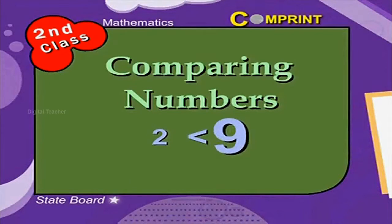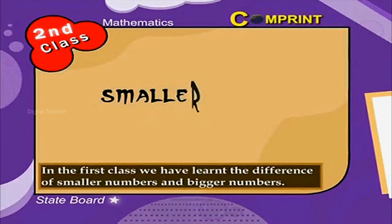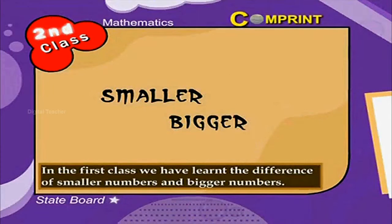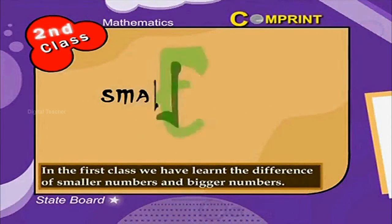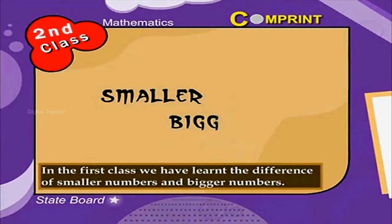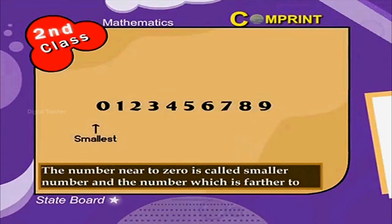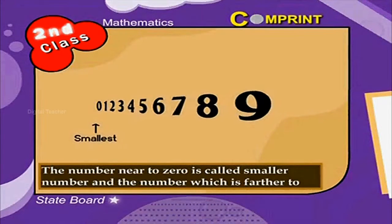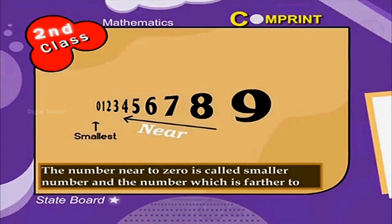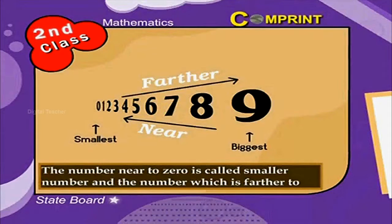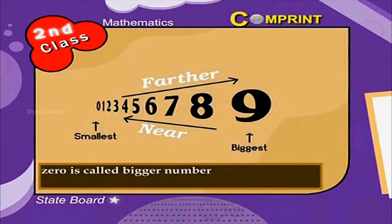Comparing numbers: Different numbers of digits. In the first class we have learnt the difference of smaller numbers and bigger numbers. The number near to zero is called smaller number and the number which is farther to zero is called bigger number.